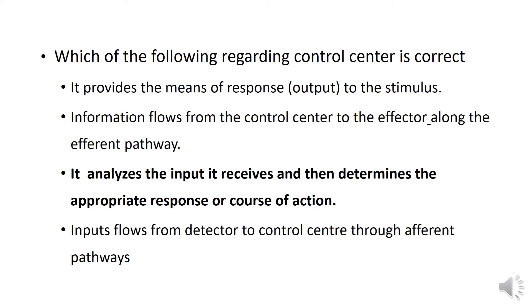Which of the following regarding control center is correct? Control center detects changes, analyzes information, and sends to effector. Effector implements the action. It provides the means of response output to the stimulus? No. Information flows from the control center to the effector along the efferent pathway? Yes, correct. It analyzes the input it receives and then determines the appropriate response or course of action. Actually it analyzes the response from the detector and input information and takes appropriate action. So this one is correct for the control center.